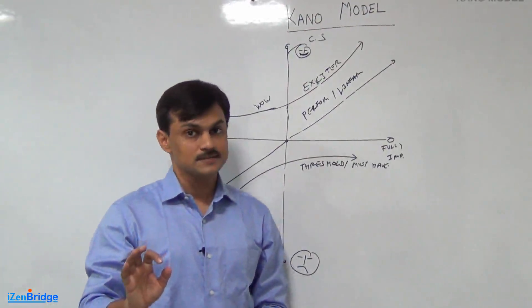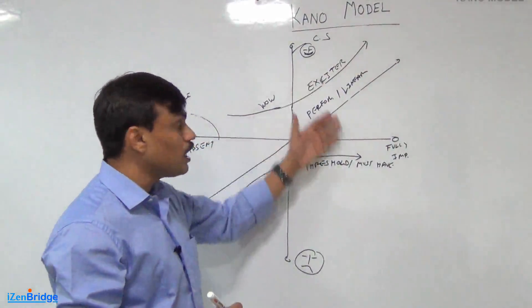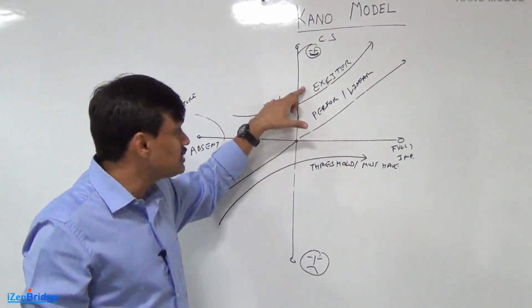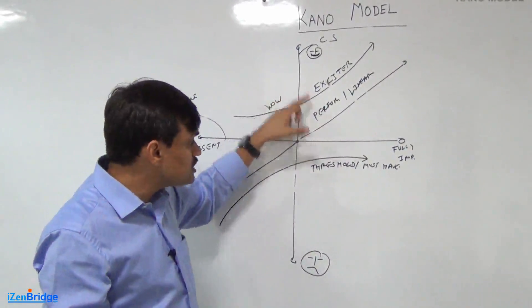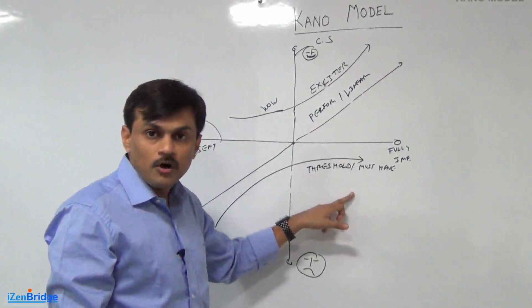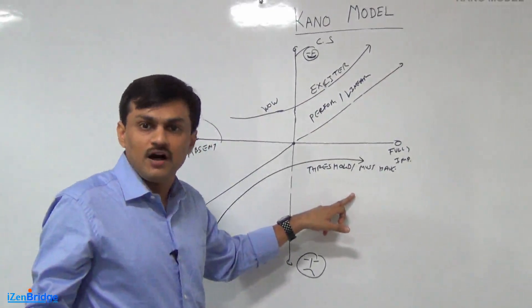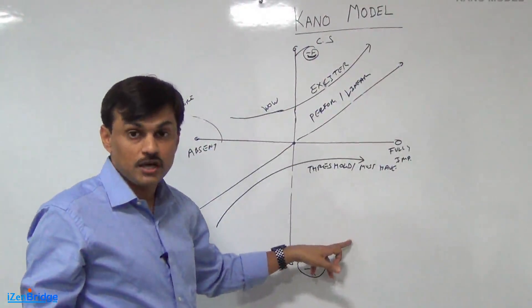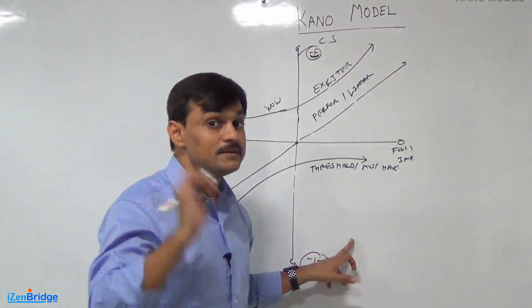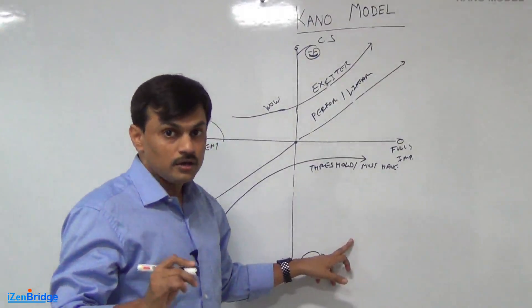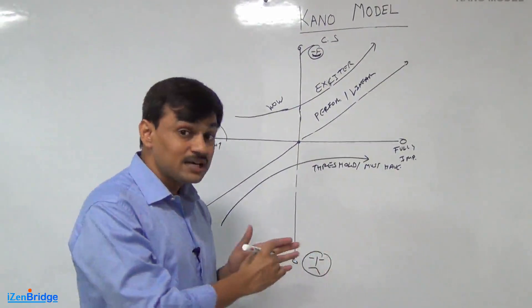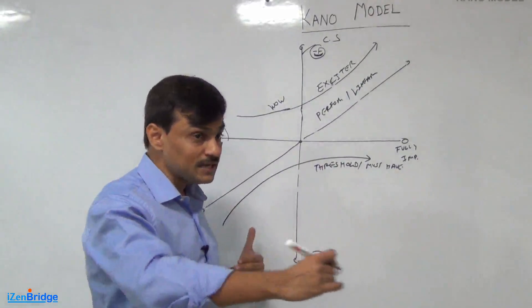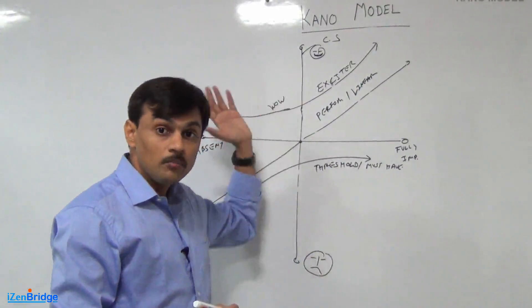The another thing we should remember as a business analyst is these categories are not static. The feature, the wi-fi which looks excited today, maybe after six months it becomes threshold because everybody provides wi-fi. So with passes of time these categories keep changing and if you are doing a business analysis in a product, you should also keep in mind the product development itself will take some time and during that time these preferences can move.